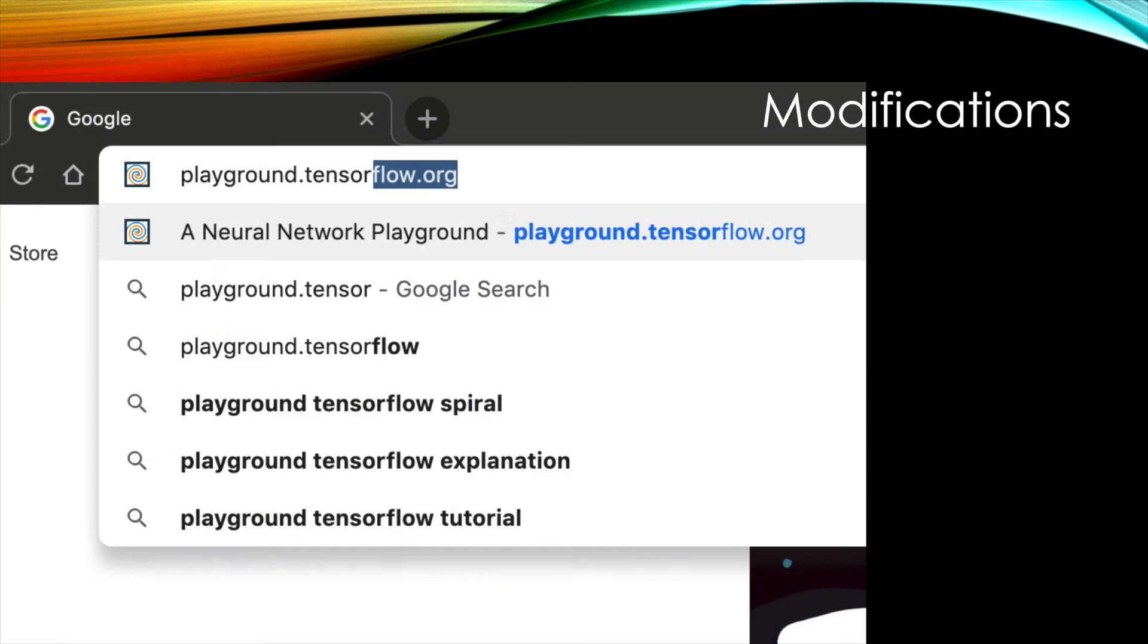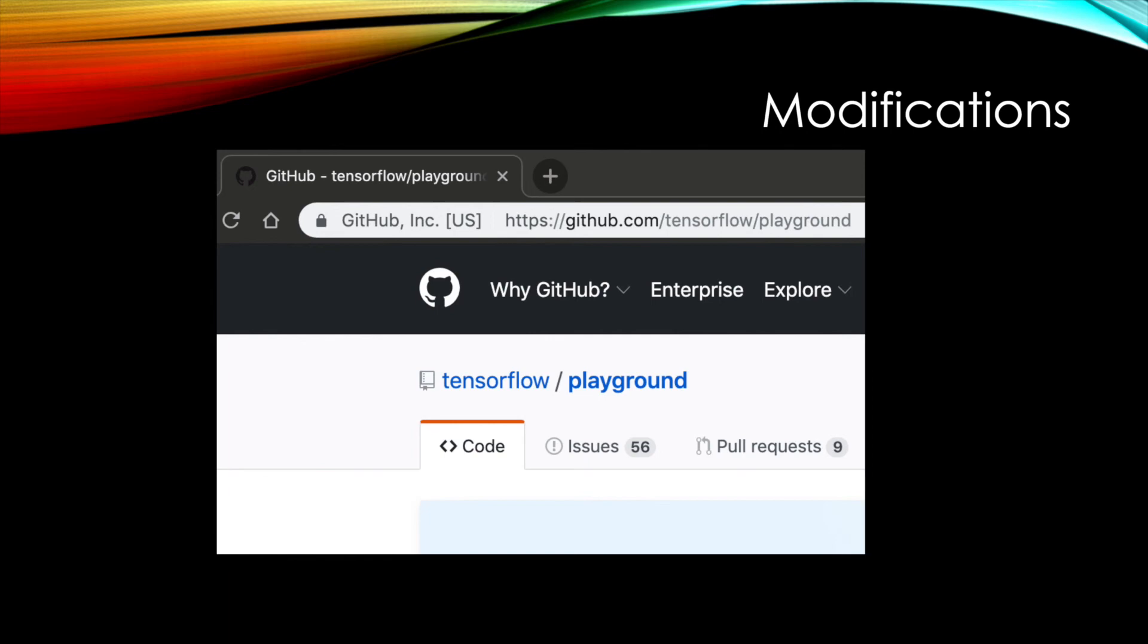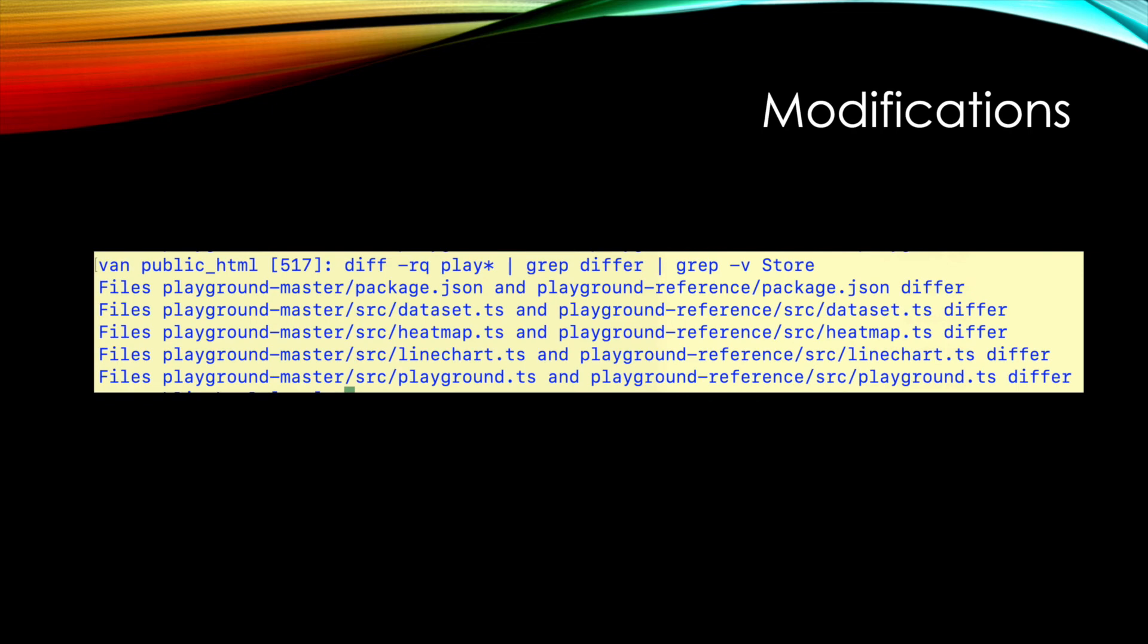So I'm going to show you really quickly how this was done. I went to TensorFlow. I looked for the source on GitHub, and they were very generous at Google Brain to open source not only TensorFlow but the code to this playground. I then found the GitHub version, and I downloaded that version and unpacked it on my machine. And then I modified these five files to add the basis functions, and that was all that was necessary to accomplish this.